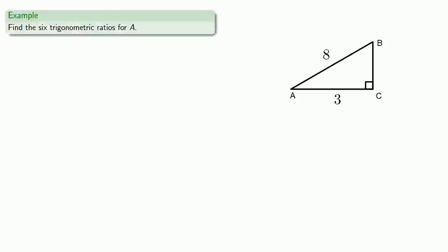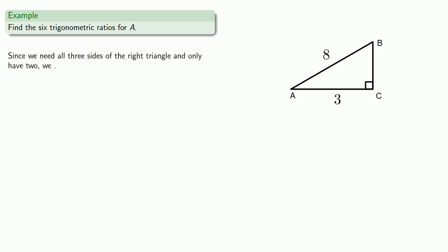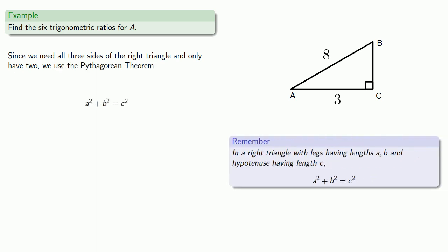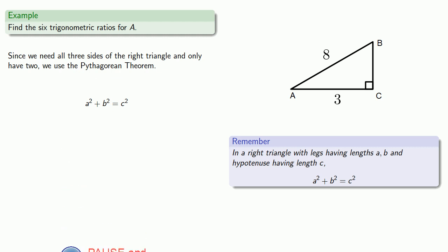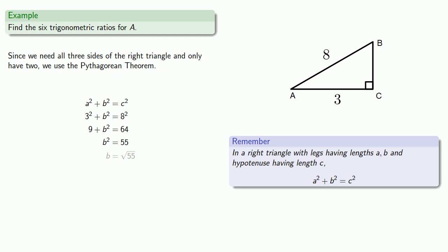Let's find the values of these six trigonometric ratios for angle A. Since we need all three sides of the right triangle and only have two, we use the Pythagorean theorem to find the third side. We know the hypotenuse is 8 and one side has length 3, so we'll substitute and solve, taking the positive square root because B is supposed to be a length.